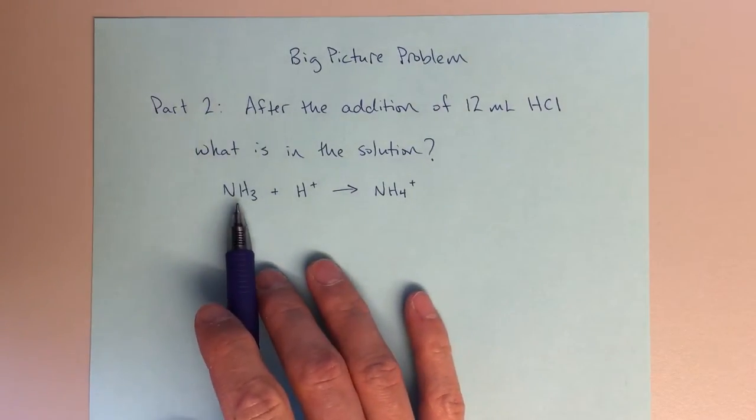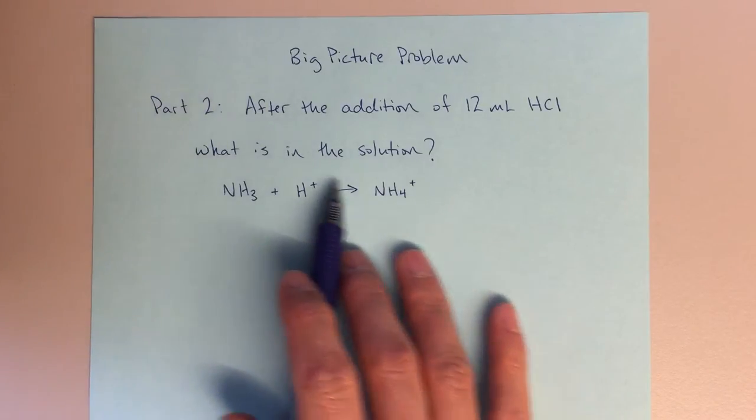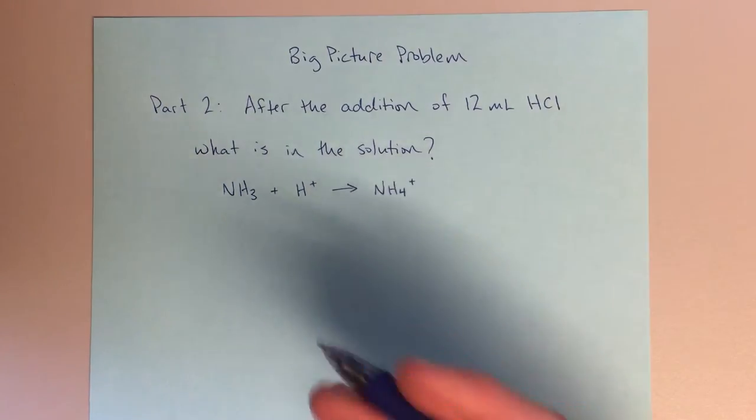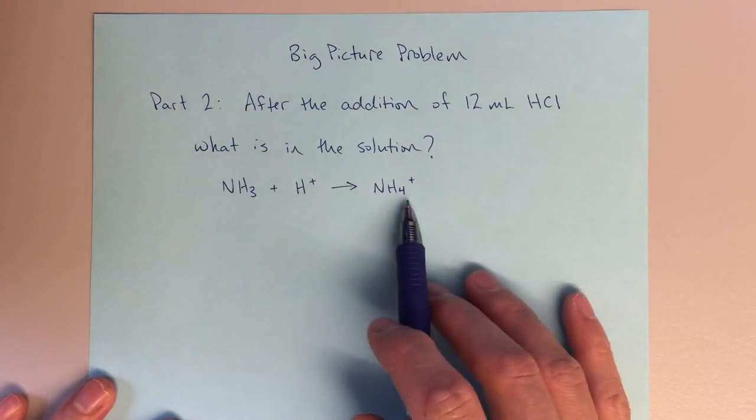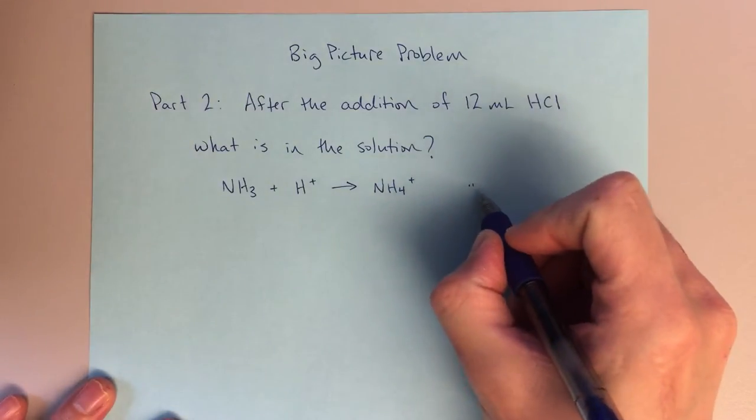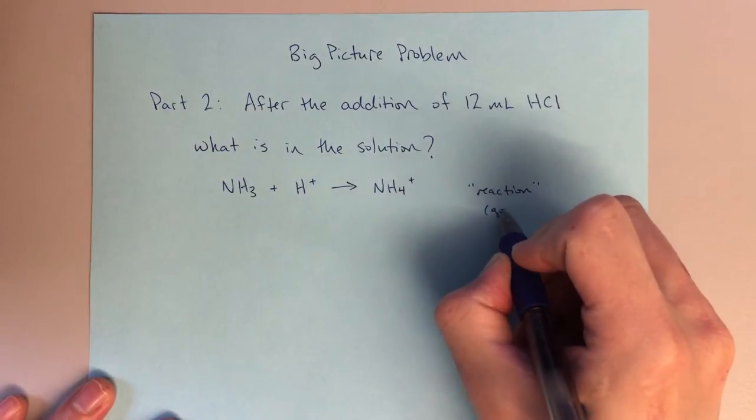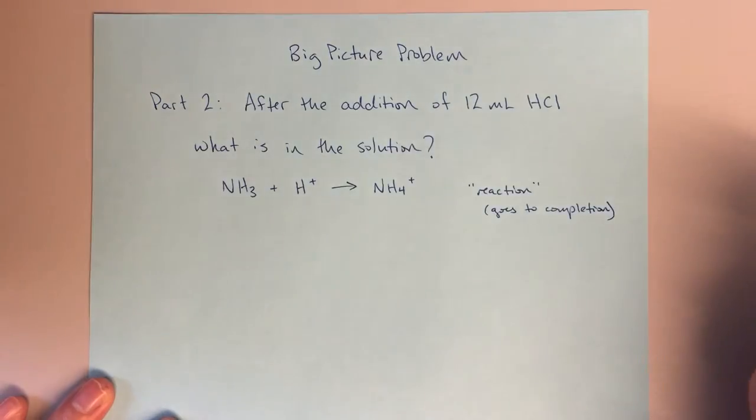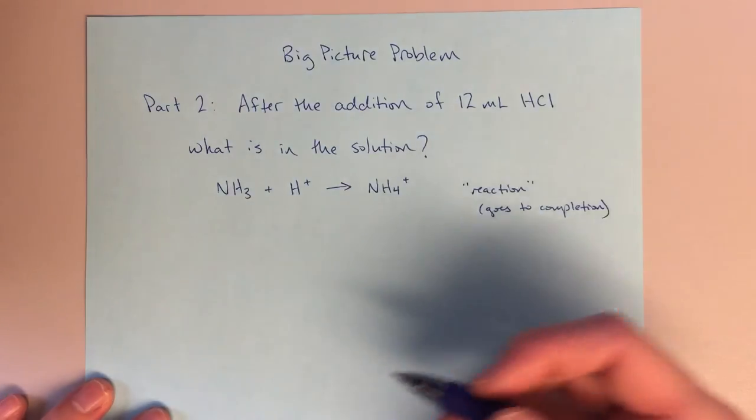So if we start with NH3 and we add in H+, then we're going to form NH4+. Coming up with this reaction on your own is really the key to unlocking this problem and getting started with this problem. NH3 plus H+ gives us NH4+. This is a reaction that's going to go to completion. And we need to use stoichiometry and limiting reagent rules to work this.